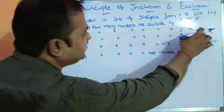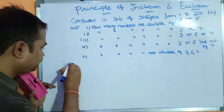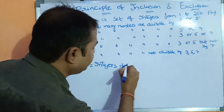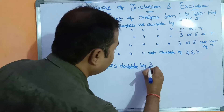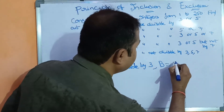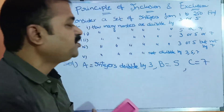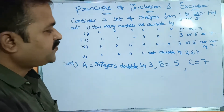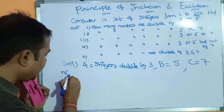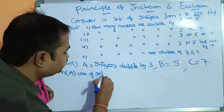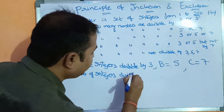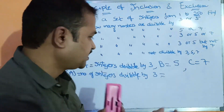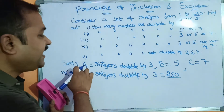Let us solve all these examples. Three numbers are given: 3, 5, and 7. Let A be the set of integers divisible by 3, B be the set of integers divisible by 5, and C be the set of integers divisible by 7. The maximum number is 250. First, let us find n(A), the number of integers divisible by 3.